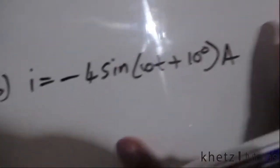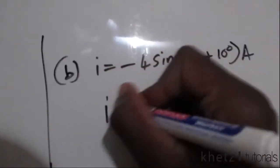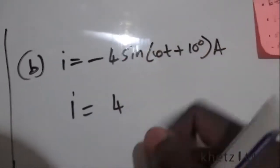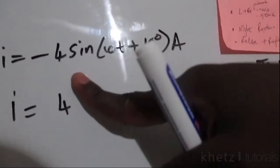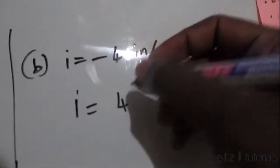Now for this one, we first have to convert this into cosine, and this is basically how we do it. To transform a negative sign into cosine, we add 90 degrees to the current angle or to the current argument.